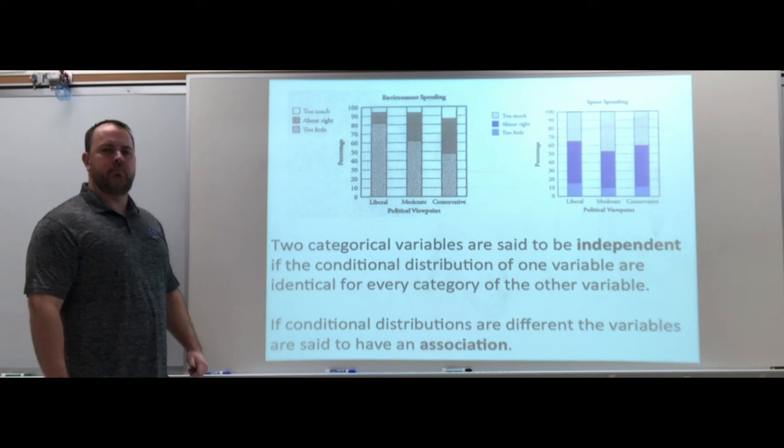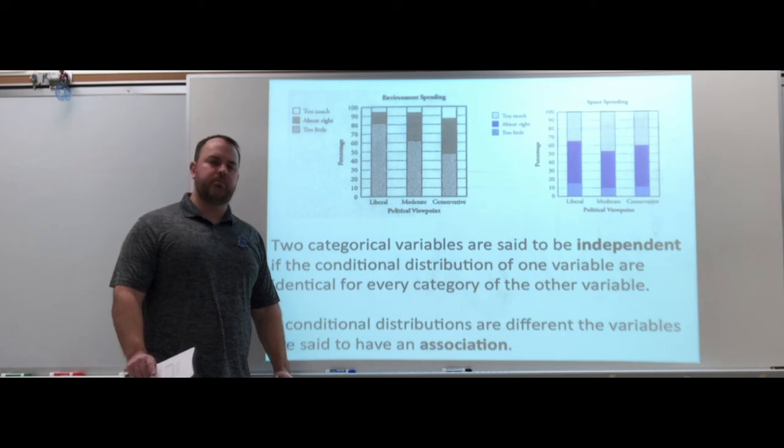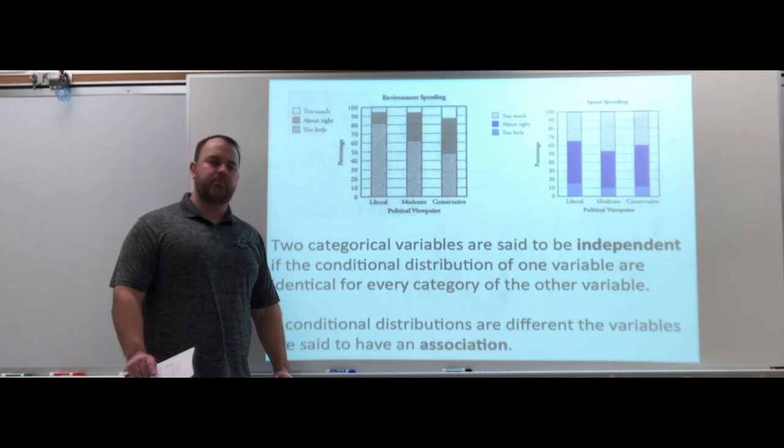This is one thing you're going to be asked to do - determine if they are independent variables or not. And again, try and stay away from dependent, instead of using the word dependent, use association or relationship. I would prefer those terms. That's the first part of 2.1. There is a second video that talks a little bit about Simpson's paradox.